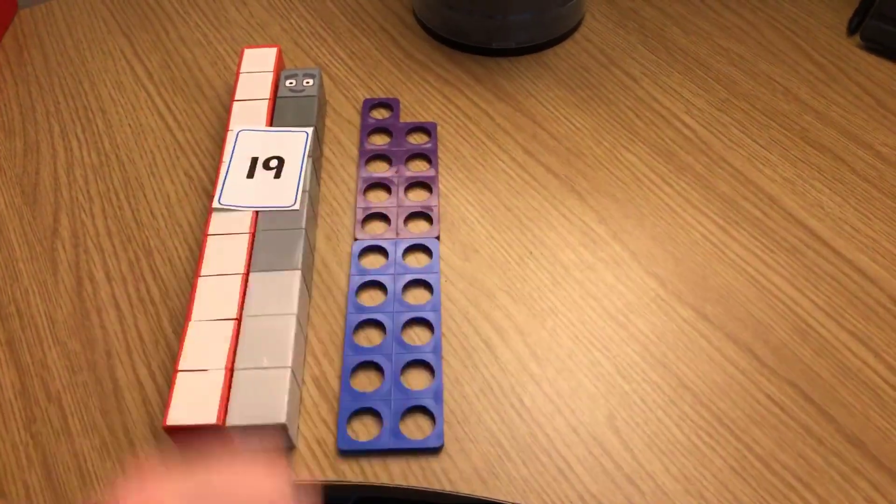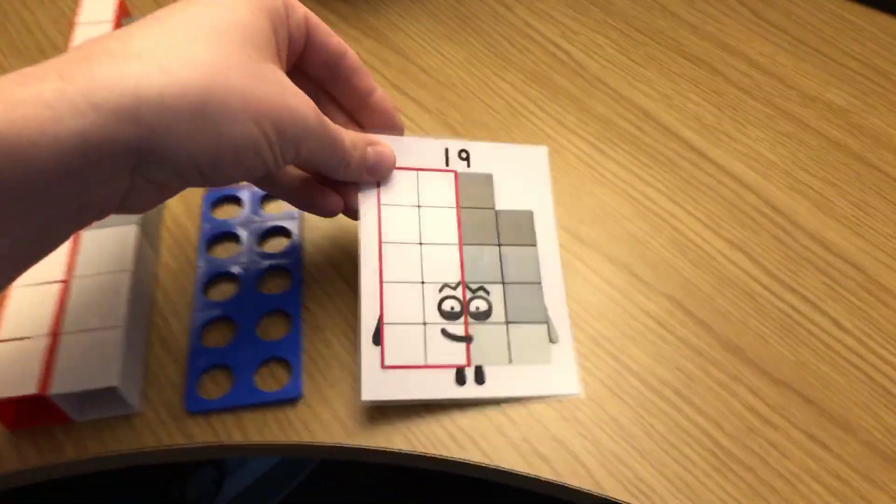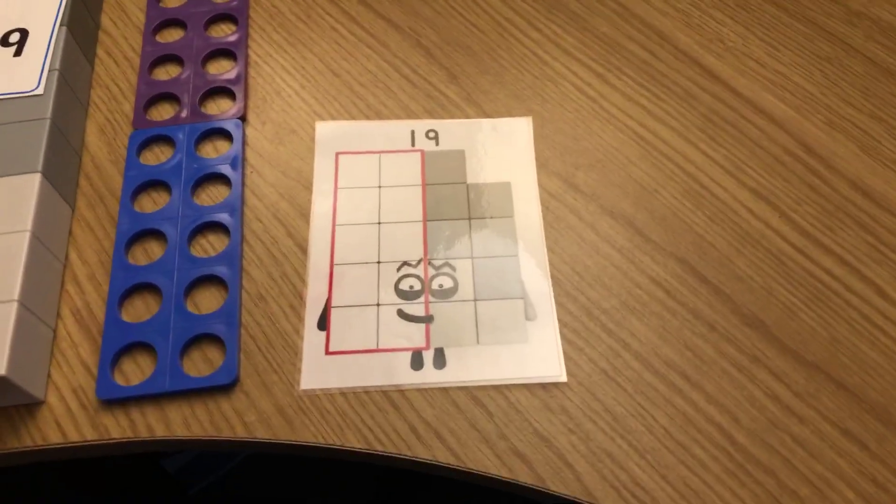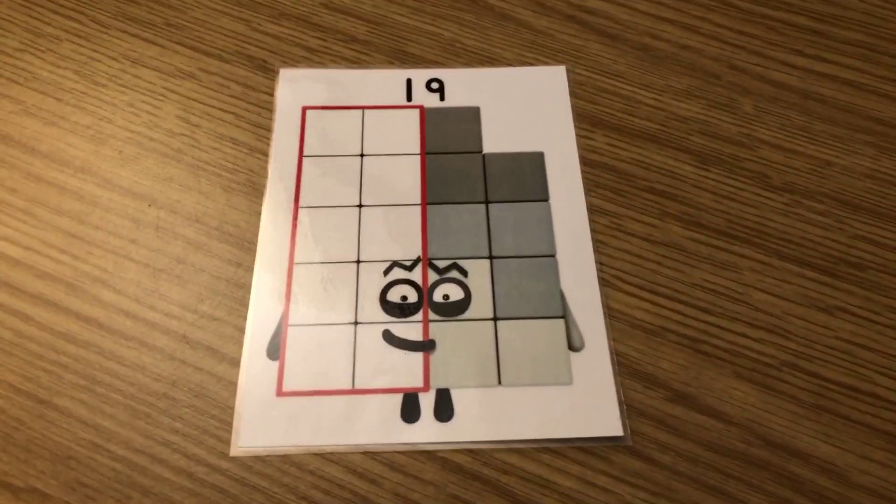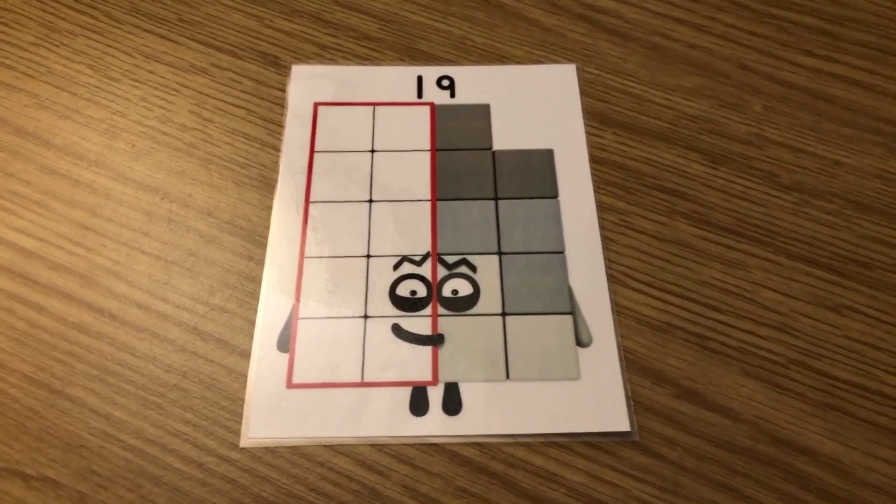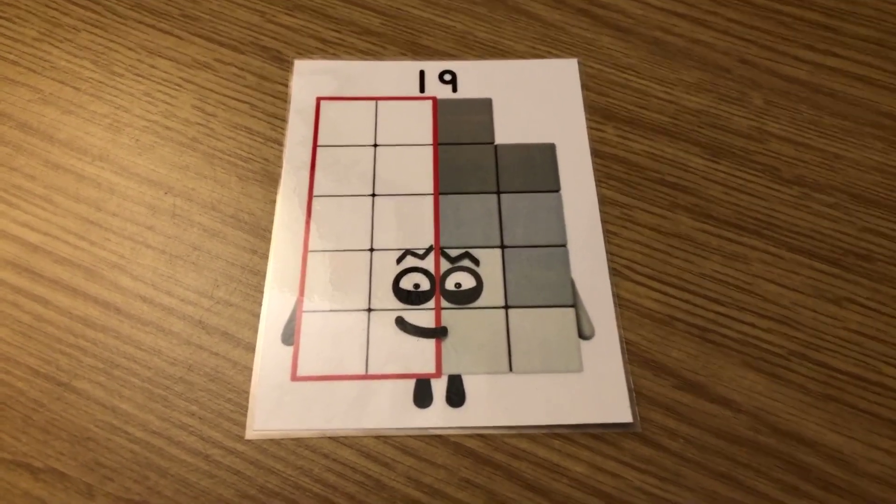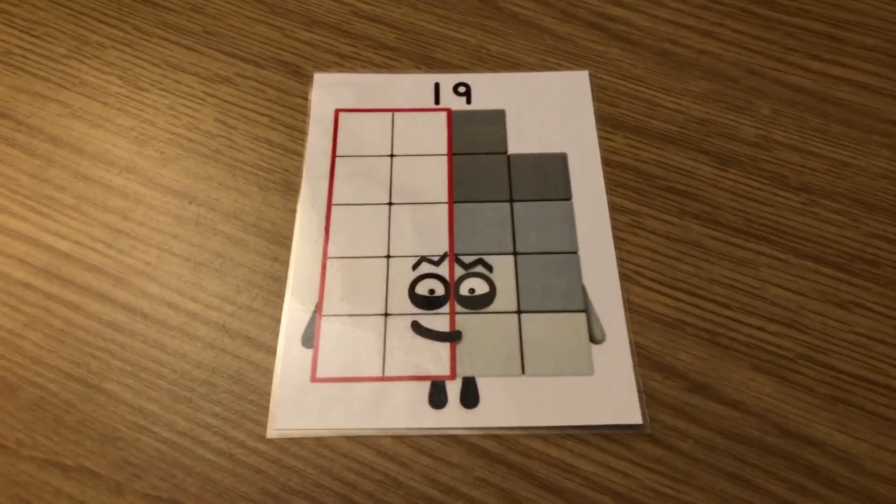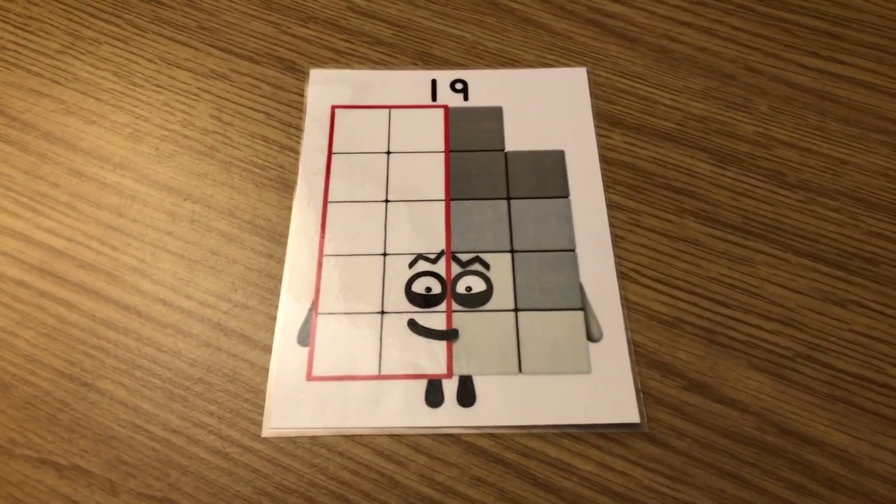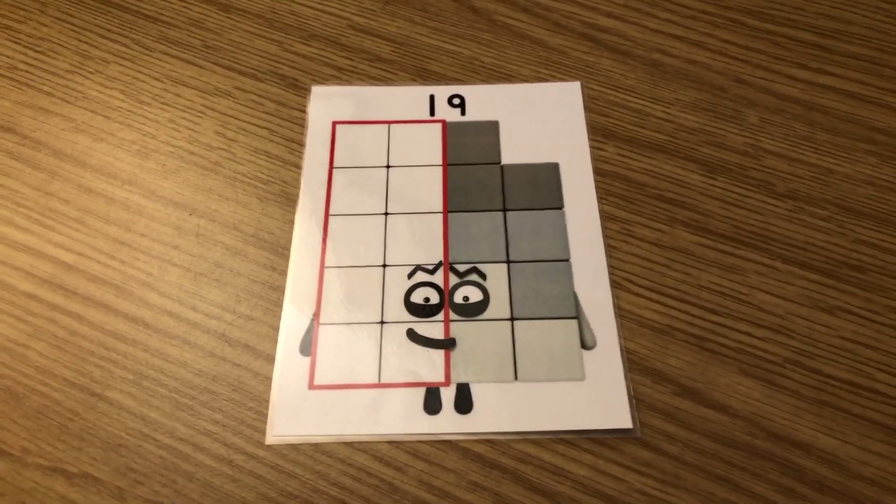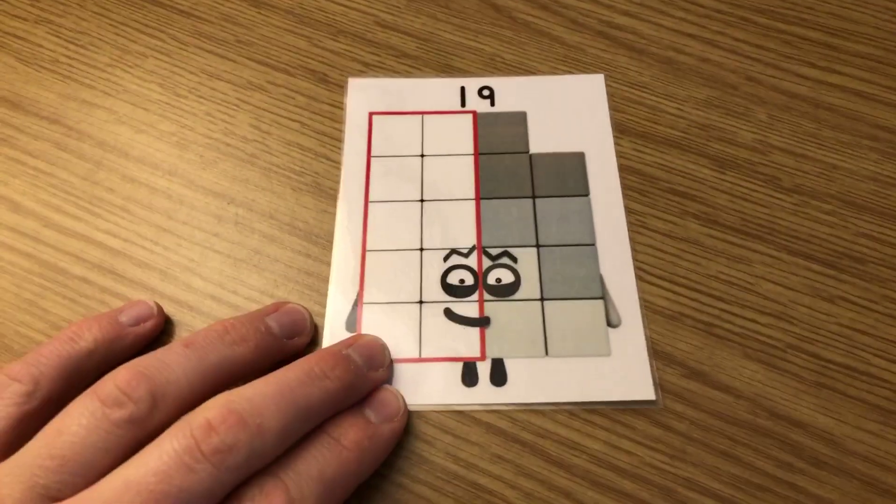Now let's have a look at the picture of the Numberblock. There he is. Now do you remember, poor number 19 at the beginning, there was something he couldn't do. Can you remember what it was? He couldn't make a rectangle, could he? No matter how many times he rearranged himself into different arrays, he couldn't make a perfect rectangle because there was always some blocks missing.